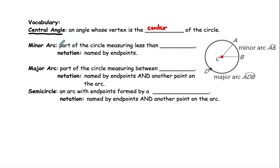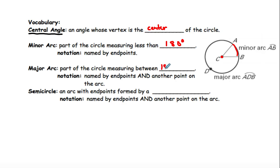A minor arc is part of the circle measuring less than 180 degrees, so it's less than half of the circle. This right here is a minor arc. A major arc is a part of the circle that measures between 180 degrees and 360 degrees.